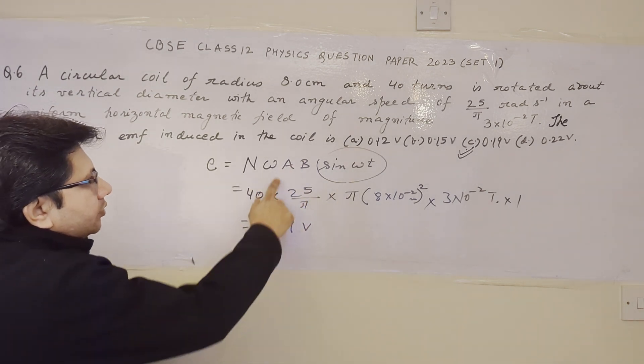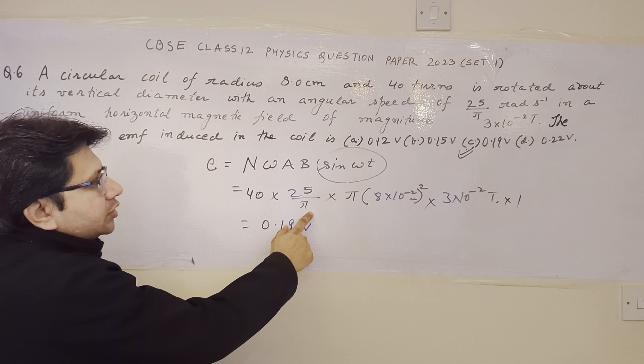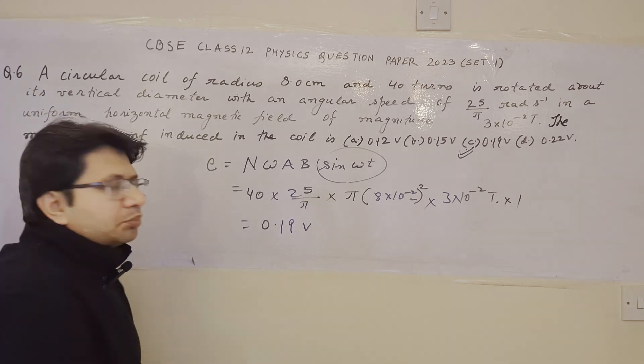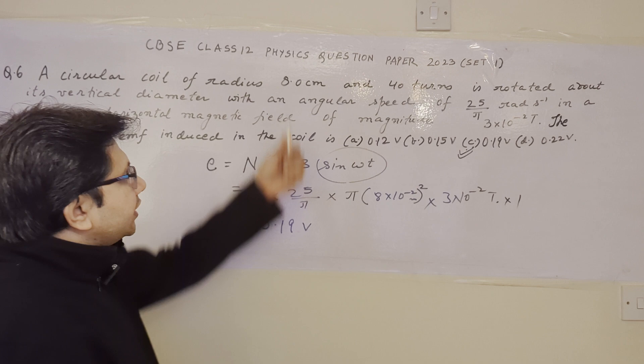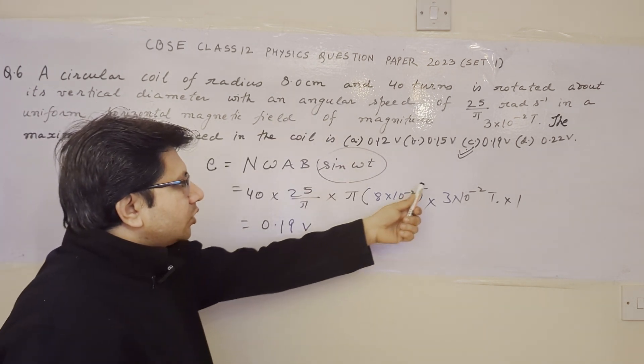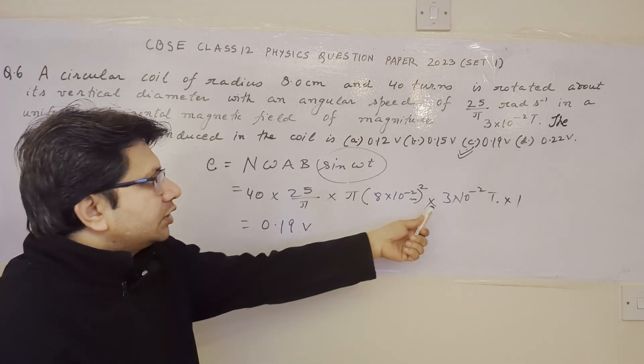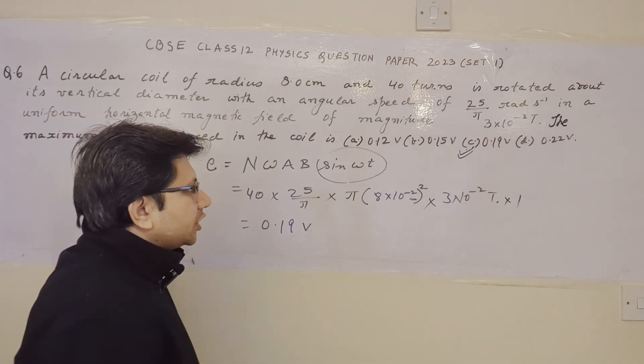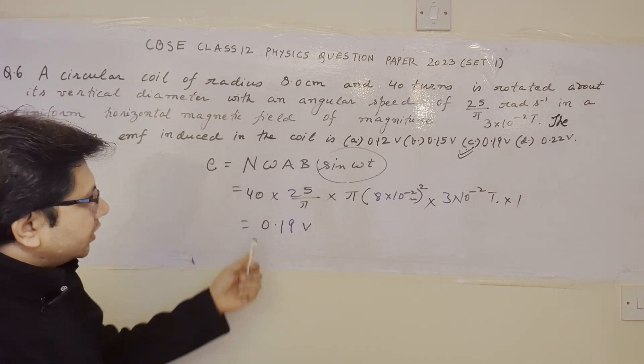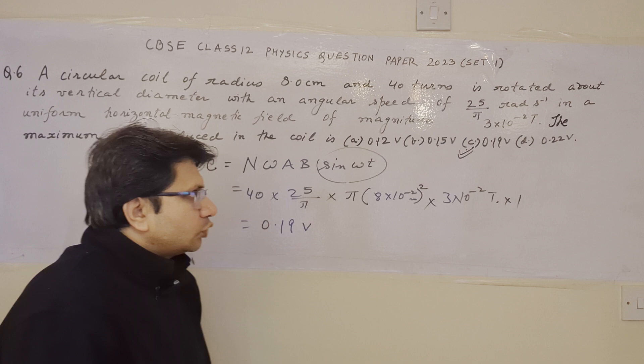N हमें दिया है number of turns 40, omega दिया है 25 upon pi radians per second. Area हम निकाल लेंगे pi R square से. R की value को हम convert करेंगे meter में. 8 centimeter को हम meter में convert करेंगे और उसका square करेंगे into B, जो हमें Tesla में दिया है 3 into 10 to power minus 2. यह सारी values put करने के बाद जो nearly equal to answer हमारा आता है, वो आता है 0.19 volts.